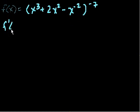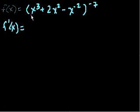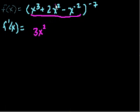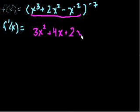We want to figure out what f prime of x is. This might seem very complicated, but using the chain rule we can do it quite quickly. So we want to take the derivative of the inner function — the derivative of x to the third plus 2x squared minus x to the negative 2. That's 3x squared plus 4x. And then with the negative exponent, negative 2 times negative 1 is plus 2x to the negative 3.